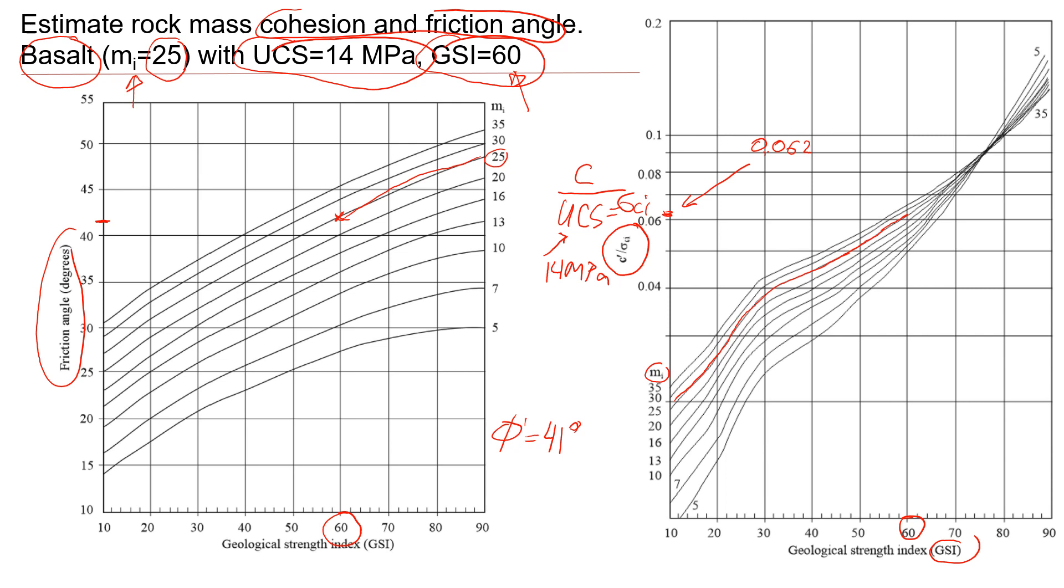So what we can write right now is that cohesion divided by unconfined compressive strength is equal to 0.062. And from here cohesion will be 0.062 times that unconfined compressive strength, 0.062 times 14, and that should give you a value of about 0.868. Here we use MPa because the value is given as MPa. So this is the value.